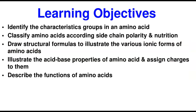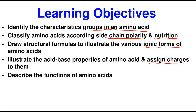At the end of this class, we will be covering the following objectives. Number one, we'll identify the characteristic groups in an amino acid. Number two, we'll classify amino acids in terms of the polarity of the side chain and nutrition. Number three, we'll draw structural formulas and illustrate the various ionic forms of amino acids. Number four, we'll illustrate acid-base properties and assign charges. And finally, number five, we'll describe the functions of amino acids.